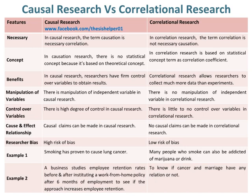There is manipulation of the independent variable in causal research, whereas there is no manipulation of the independent variable in correlational research. There is a high degree of control over variables in causal research, whereas there is little to no control over variables in correlational research.